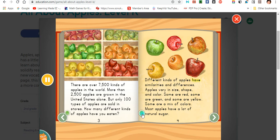Different kinds of apples have similarities and differences. Apples vary in size, shape, and color. Some are red, some are green, and some are yellow. Some are a mix of colors. Most apples have a lot of natural sugar.